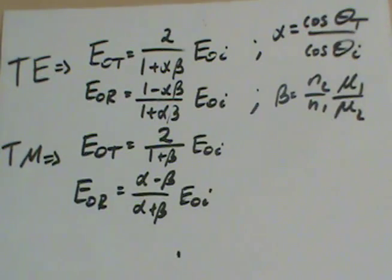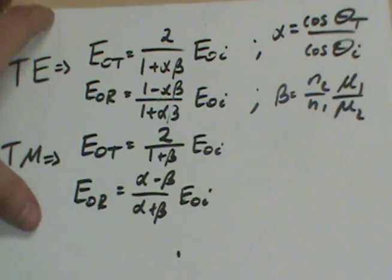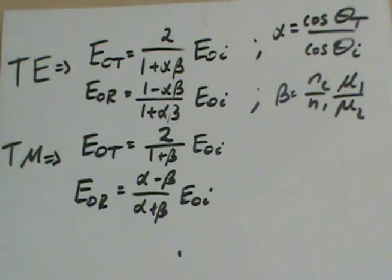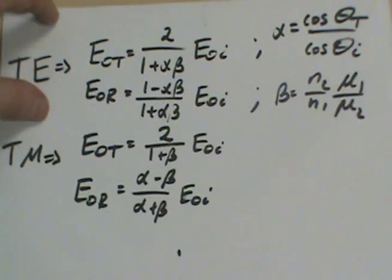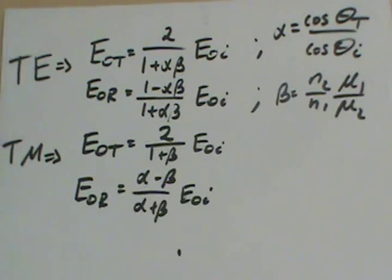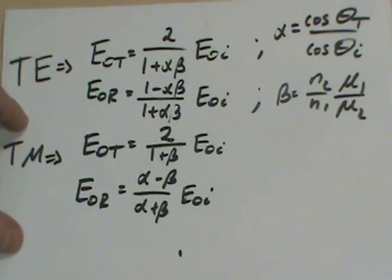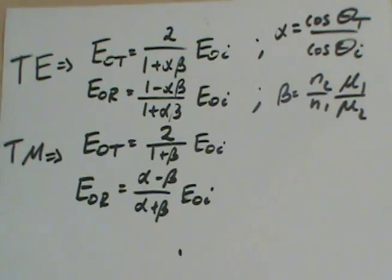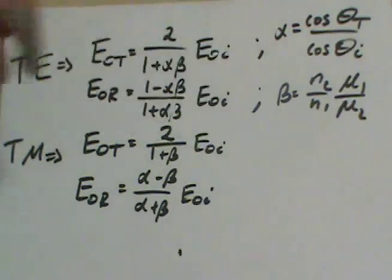To summarize, these are the two pairs of Fresnel equations: the first for the transverse electric case, the second for the transverse magnetic case. The coefficients alpha and beta were defined throughout the derivation.